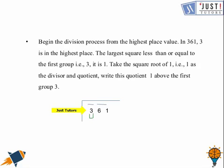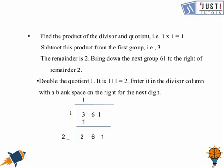And the square root of 1 is 1 itself. So as the divisor and quotient you need to write 1, as I will show you here above this one, as a divisor and as a quotient. So 1 times 1 will give you 1. If you will take away this 1 from 3 you will get 2 here. Then you need to bring this another pair down together. So it will become 261.